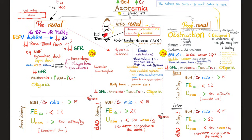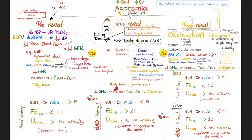Intrarenal azotemia: the problem is in the kidney. It could be a problem in the glomerulus as in glomerulonephritis — all nephritic syndromes can lead to intrarenal azotemia, particularly rapidly progressive glomerulonephritis. It could be a vascular problem such as chronic uncontrolled diabetes or sickle cell disease. It could be interstitial problems as in acute interstitial nephritis from medications like NSAIDs, penicillin, cephalosporins, and sulfonamides, or from viruses, lupus, Sjogren's syndrome, and cryoglobulinemia. Or the problem could be in the tubule — acute tubular necrosis. On an exam question, the cast is usually described as muddy brown granular.